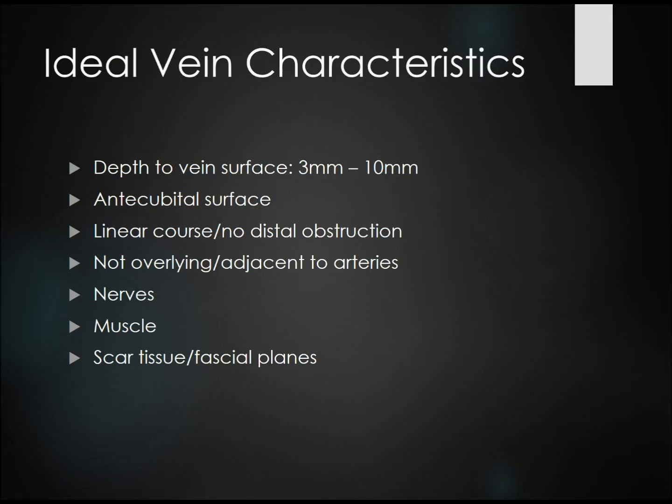Let's talk about ideal vein characteristics. Ideally, target a vein about 3 to 10 millimeters below the surface — veins more superficial than this are harder to cannulate because you can't redirect your needle, and veins deeper than this may be too deep to achieve an appropriate angle. Target veins on the antecubital surface, make sure the vein follows a linear course with no distal obstruction, be conscious of veins close to arteries, and avoid nerves, muscles, scar tissue, and fascial planes.